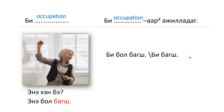Now let's look at another sentence pattern: 'I work as.' You say 'I' and then the occupation and add a suffix — it is an instrumental case suffix. When you add this suffix you have to think about vowel harmony. If you don't know what vowel harmony is, I previously made a video on it — you can check that later.